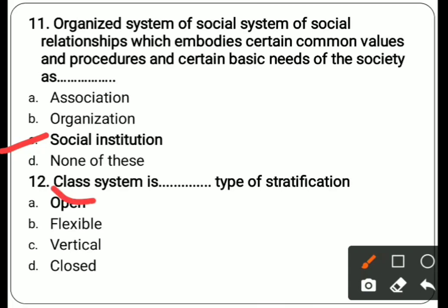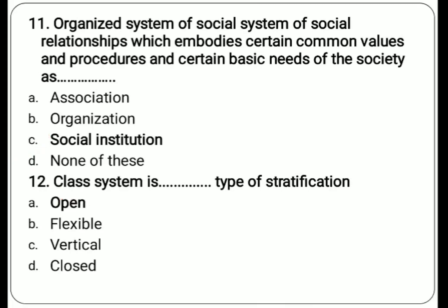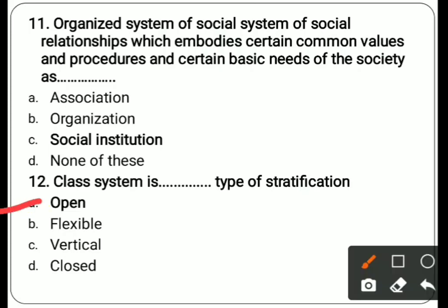Twelfth question: class system is a dash dash type of stratification. Options are open, flexible, vertical, close. The correct answer is open. Class system depends on social status — power, prestige, and money. Movement from one class to another is possible, so it is an open type of stratification.